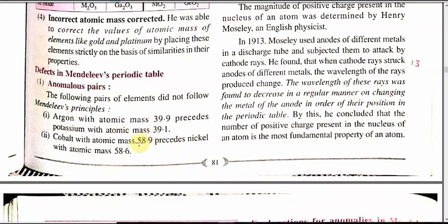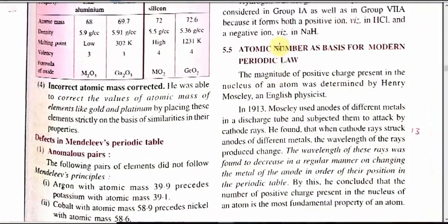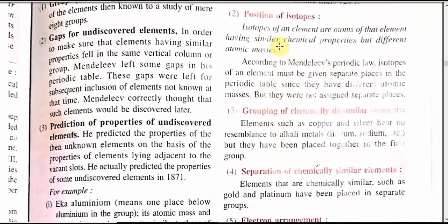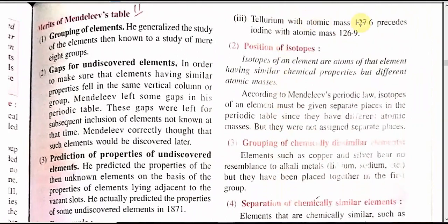Why does this happen? Because in Mendeleev's time, the concept of atomic mass was prominent, so he placed elements according to atomic mass and had nothing to do with atomic number — which was later corrected by Moseley. Also, tellurium with atomic mass 127.6 precedes iodine with atomic mass 126.9. With the atomic mass concept, this appears correct, but nowadays we follow atomic number, so it becomes incorrect.